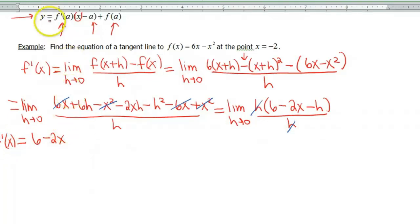Okay, now we need f prime of a, though. And remember that a is, in this particular example, negative 2. So I need to plug negative 2 into this function. And that will give me my first piece that I need. And when I crunch out that algebra, that gives me a 10.